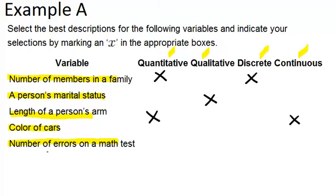And the last one number of errors on a math test? Well that's quantitative. So quantitative because it's a number and that's also discrete because you can't have partial error. You have maybe two errors or three errors or four errors. It has to be whole number.